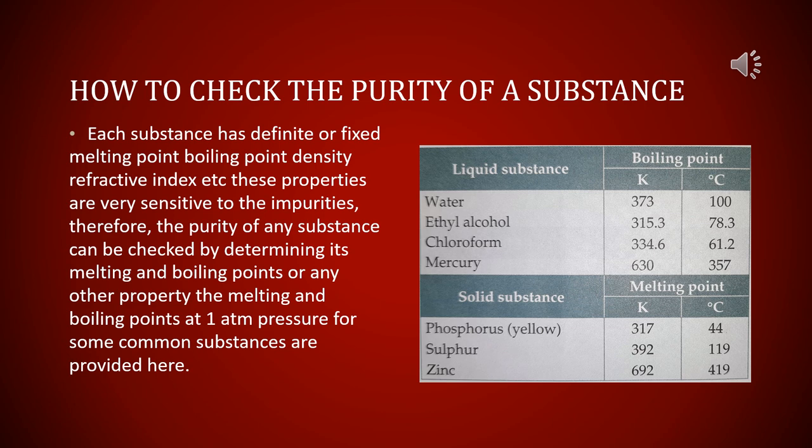Similarly, phosphorus, sulfur, and zinc have different melting points and boiling points. There are multiple properties which you are going to study in this chapter that can be used to differentiate between substances or to obtain purification information of a substance.